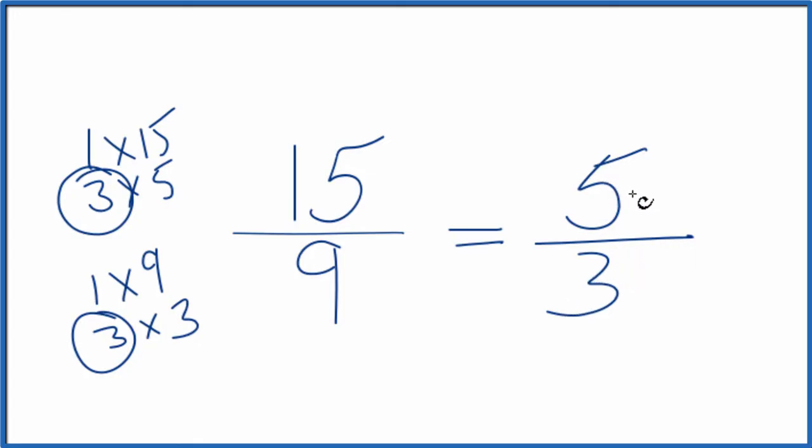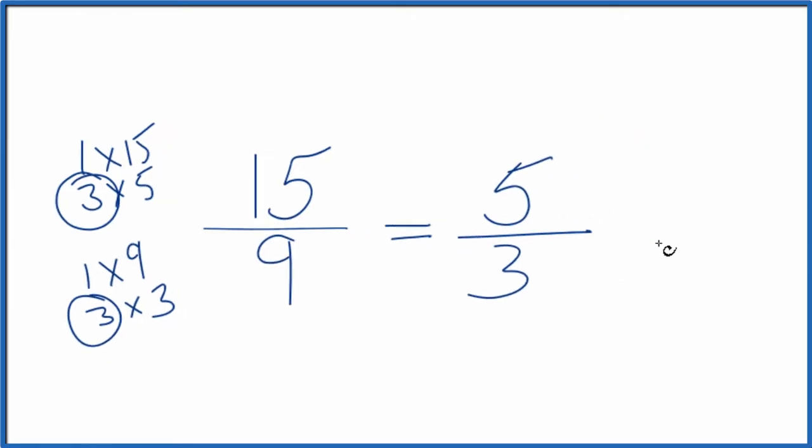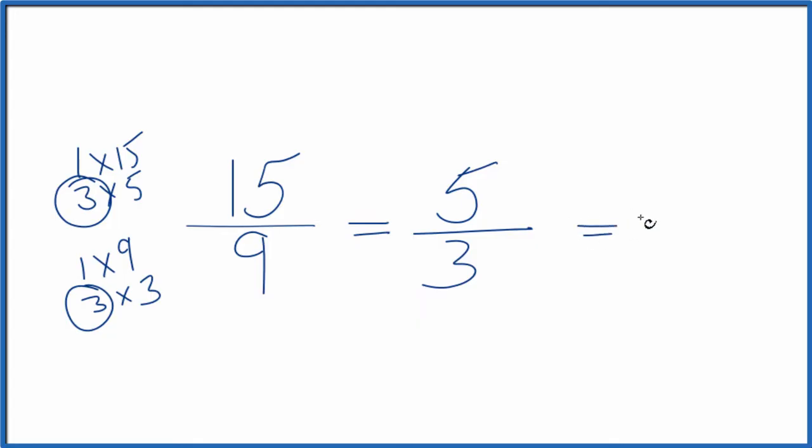Note that this is an improper fraction. Both of these are improper fractions because the numerators are bigger than the denominators. So we could write this as a mixed number. We could say 3 goes into 5 one time with 2 left over.